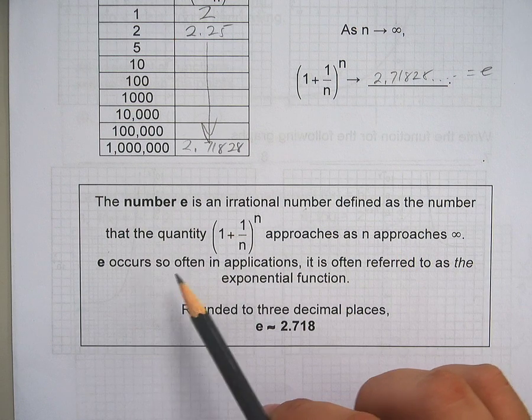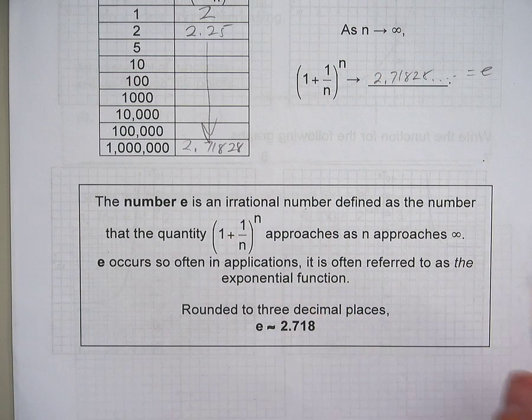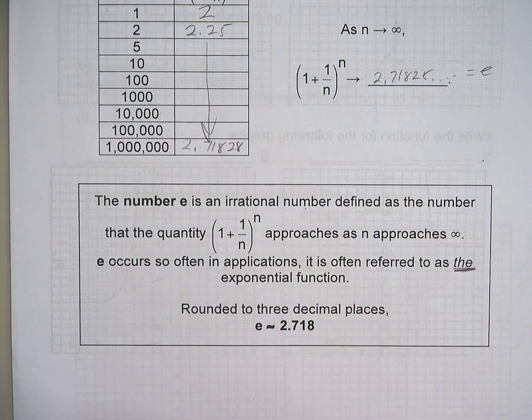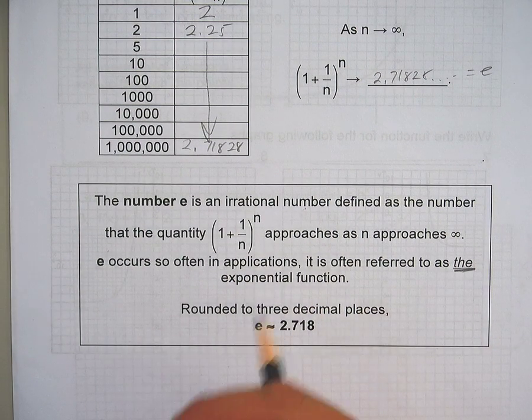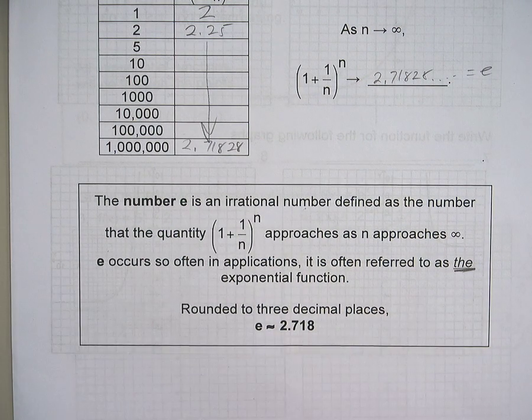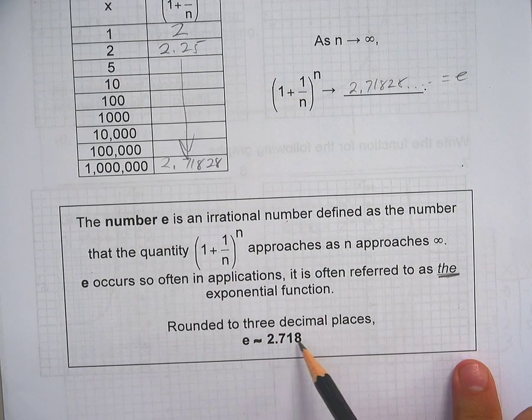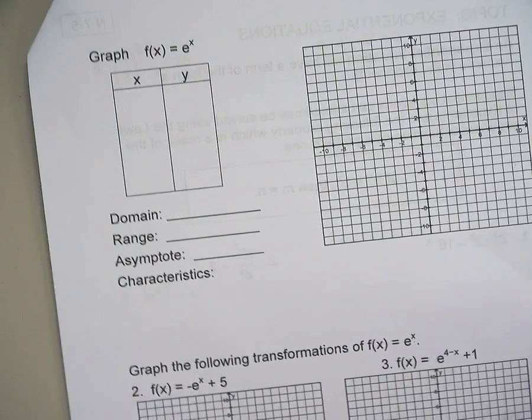E occurs so often in applications, it's often referred to as the exponential function. This thing happens all the time, kind of like pi. It just kept happening, so eventually we gave it a name. And we call it E. And it's approximately 2.718281828.